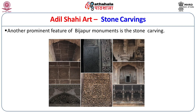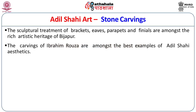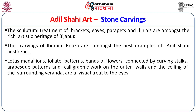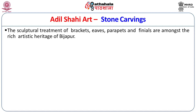Stone carvings are another important aspect of Adil Shahi monuments. Some of the best stone carvings are seen at the tomb of Ibrahim Roza, featuring lotus medallions, foliate patterns, bands of flowers connected by curving stalks, arabesque patterns, and calligraphic work on the outer walls and ceiling of the surrounding veranda — a visual treat. Most carvings are found in brackets, eaves, parapets, and finials.